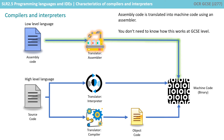As we can see from this diagram, whether you write something in assembly code or one of the many high-level languages available in source code, everything must be translated before it can be executed as machine code. Assembly code is translated by an assembler, and although you should be aware of that fact, you don't need to know anything about how an assembler works at GCSE level.